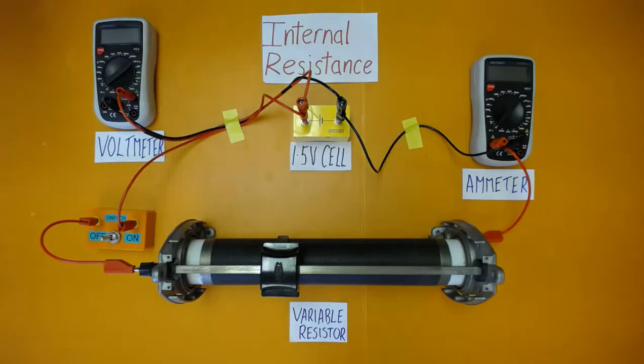To begin, we record the voltage of the cell when the switch is open. This gives the EMF of the cell, which we can see is 1.54 volts, so the EMF is 1.45 volts.